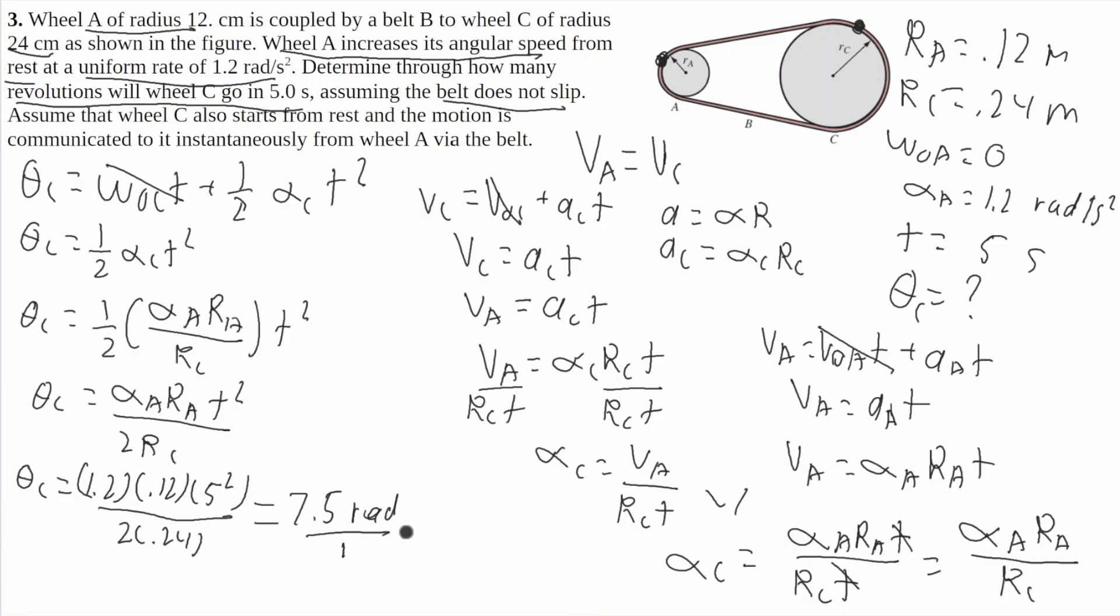So I'll say that's times 1 revolution over 2 pi radians, which will ultimately equal 1.2 revolutions. And that is your final answer. Thank you for watching.